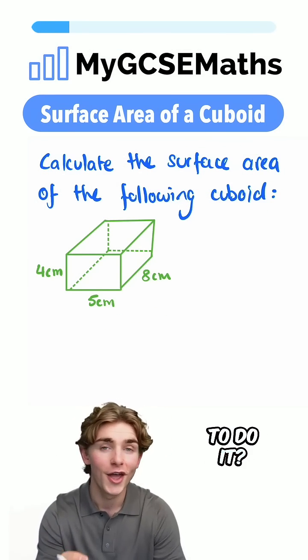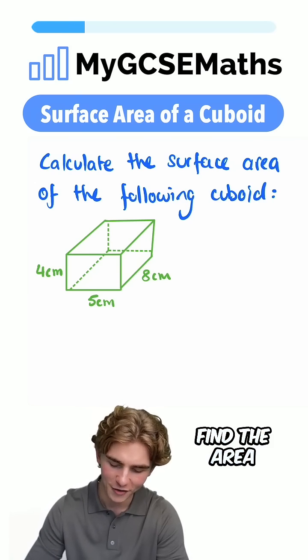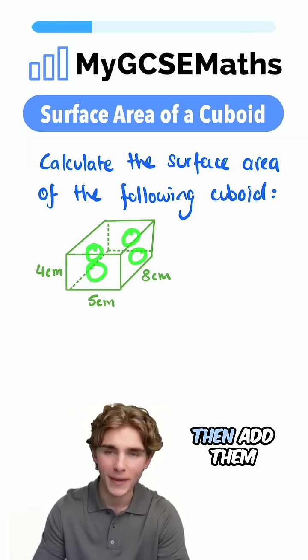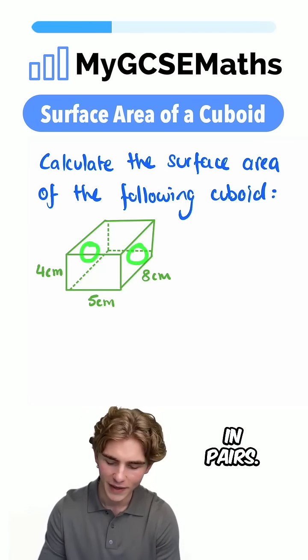Guys, how are we going to do it? When it comes to working out the surface area of a cuboid, we're going to need to find the area of each of the faces and then add them together. But we can use a little trick. We can use the fact that each of our faces come in pairs.